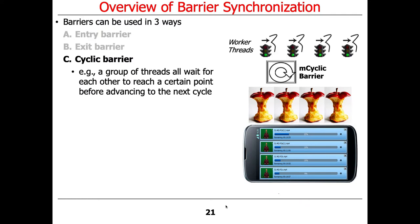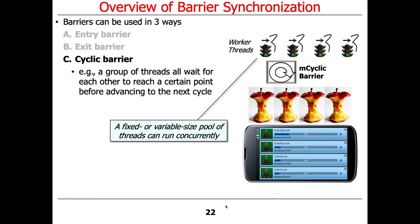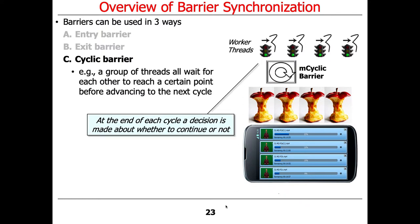The third form is a cyclic barrier, which is a variant of the other two with a certain twist. A group of threads all have to wait for each other to reach a certain point before they can advance to the next phase, the next cycle. You can have a fixed or variable-sized pool of threads running concurrently, using a cyclic barrier to coordinate their actions. At the end of each cycle, the threads can decide if they want to continue or not.